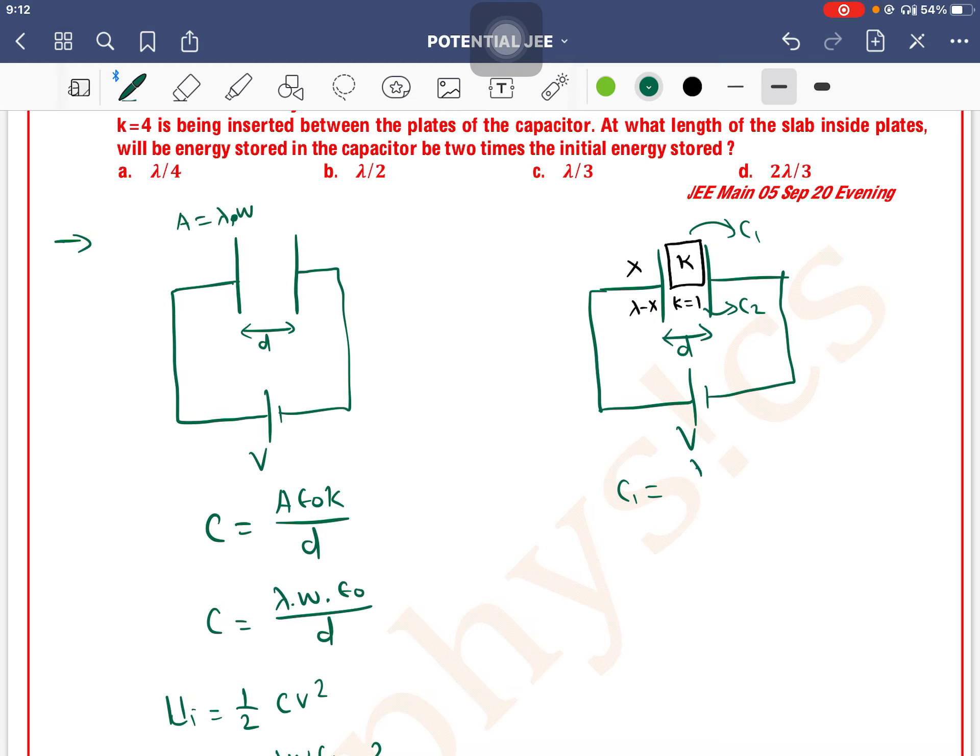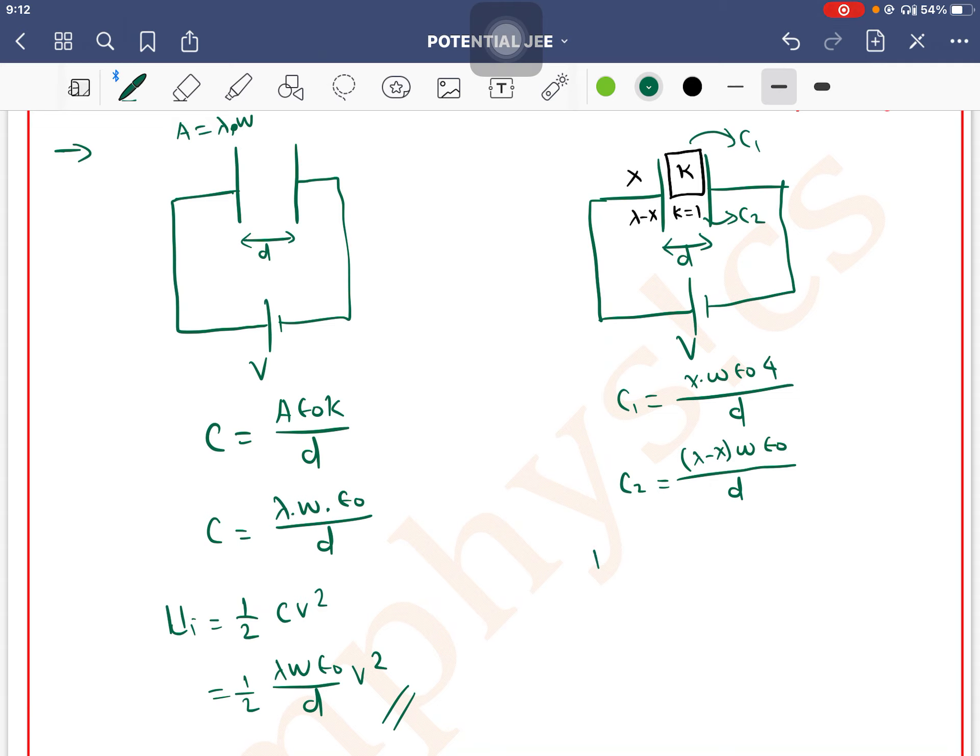So C1 equals A epsilon naught K by D, where A is lambda into x. So C1 equals x times W times epsilon naught times 4 divided by D. And C2 equals lambda minus x times W times epsilon naught times 1 divided by D.